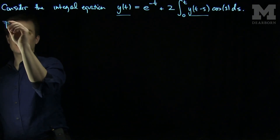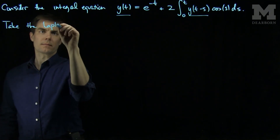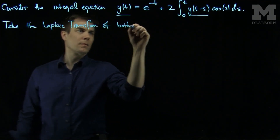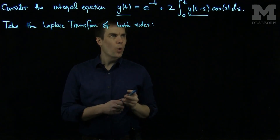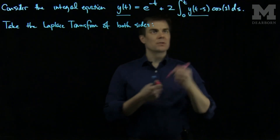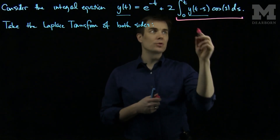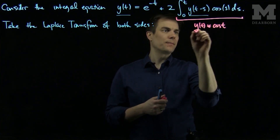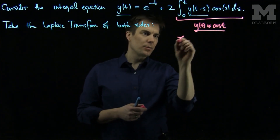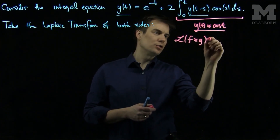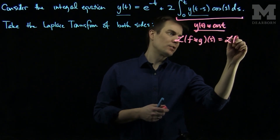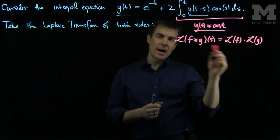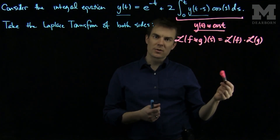So let's take the Laplace transform of both sides. When we do, we'll need the observation that the integral expression is the convolution of y and cosine — that is, y of t convolution cosine of t. We'll also use the fact that the Laplace transform of f convolution g equals the Laplace transform of f times the Laplace transform of g. So when taking the Laplace transform of a convolution, we simply multiply the corresponding Laplace transforms.